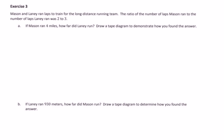Now in Exercise 3, Mason and Lani ran laps to train for the long-distance running team. The ratio of the number of laps Mason ran to the number of laps Lani ran was 2 to 3. If Mason ran 4 miles, how far did Lani run? Draw a tape diagram to demonstrate how you found the answer. The first thing we're going to do is talk about our ratio language and underline what is being compared — the number of laps Mason ran to the number of laps Lani ran.